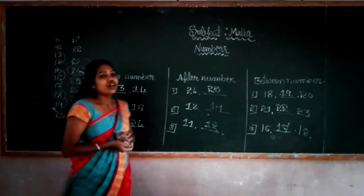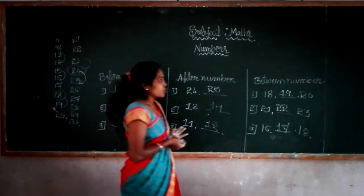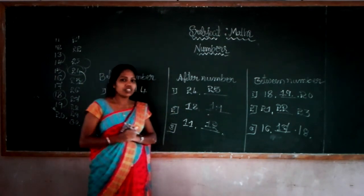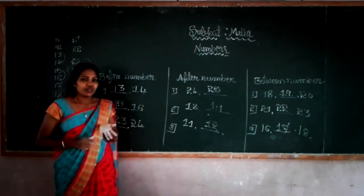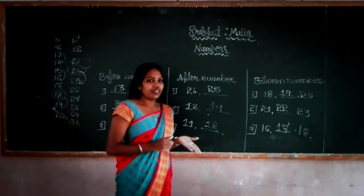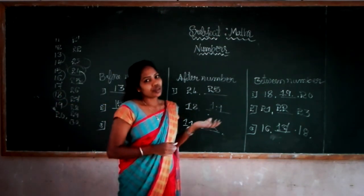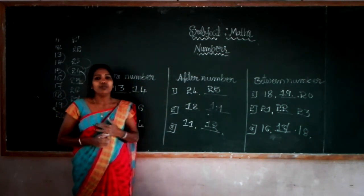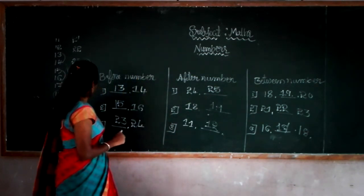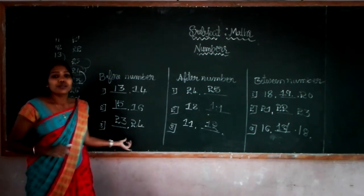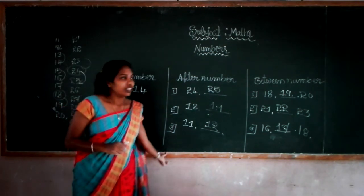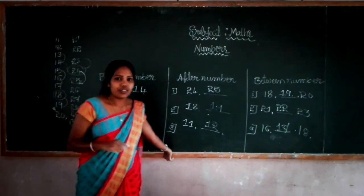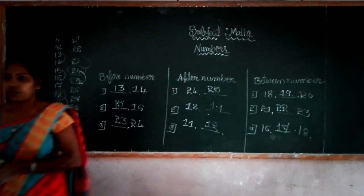I hope you understand the numbers 11 to 30 — the numbers in words and before number, after number, and between number. In the next class, we will learn numbers from 31 to 50. Thank you so much, dear students.